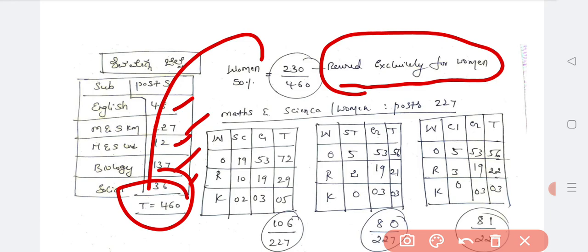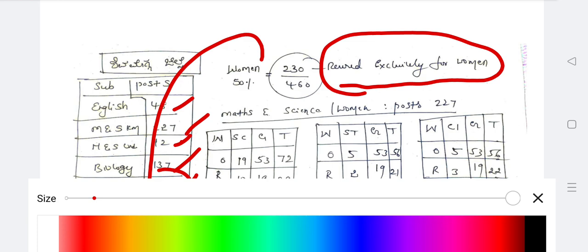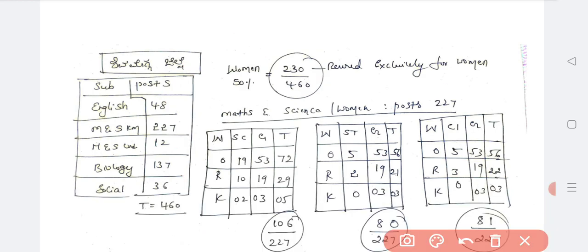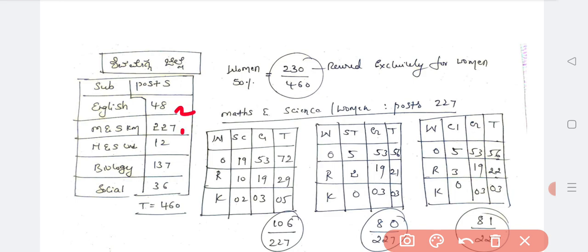230 seats are exclusively for you. This is 50% reservation. 230 seats are reserved out of 460 seats. In English, there are 24 seats reserved for you. Let's analyze it. Divide by 2 is reserved for you.